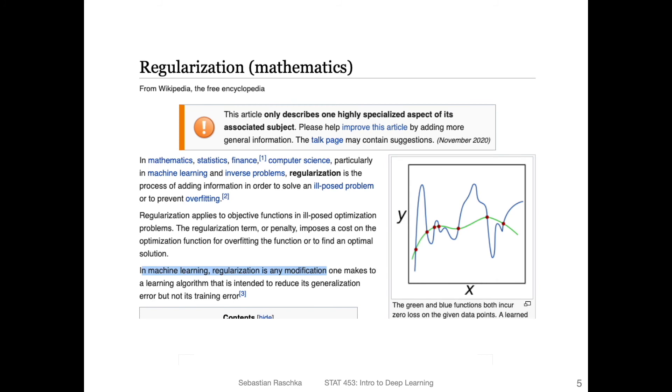While the traditional definition of regularization is the process of adding information in order to solve an ill-posed problem or to prevent overfitting, of course, like with so many other things, machine learning and deep learning have special, altered uses of the same term. So it's always interesting to see how terms get adopted in the context of machine learning. In the context of machine learning, people also sometimes refer to regularization as any modification one makes to a learning algorithm that is intended to reduce its generalization error, but not its training error. So I just wanted to mention that - the term is kind of related, but not quite the same. Here we are basically interested in lowering the generalization error.